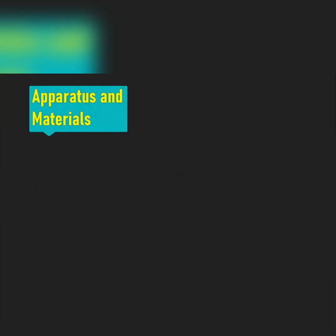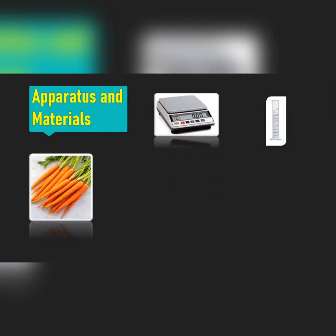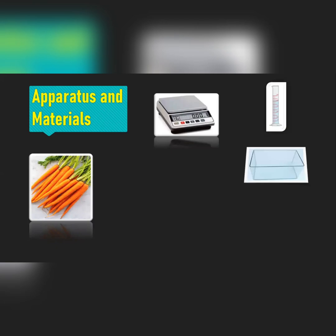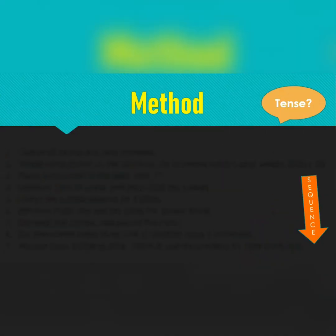Before we proceed, I took a certain position on this lab. Just soaking versus not soaking is simple, so I decided to add more meat to the lab to show more thinking. When your examiner sees this, they'll know you're really thinking about what you're doing. What do we need? We're going to need carrots, a balance, a measuring cylinder, a glass tank, paper towel, and an oven.